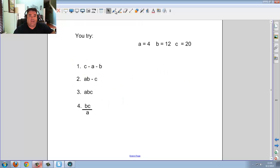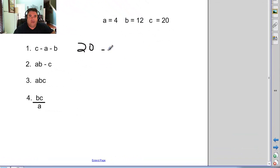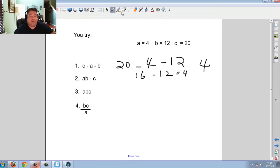Let's see how you did. So c minus a minus b. c was 20, minus a, which is 4, minus b, which is 12. Going from left to right, 20 minus 4 is 16. Minus 12, I get 4. Let me double check. 20 minus 4 is 16. Minus 12 is indeed 4. So there's your value there.